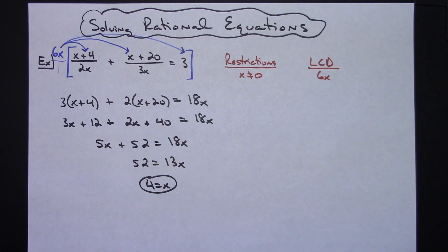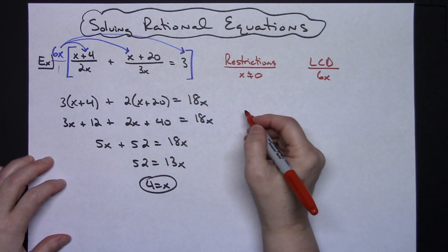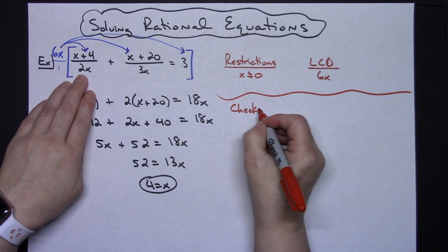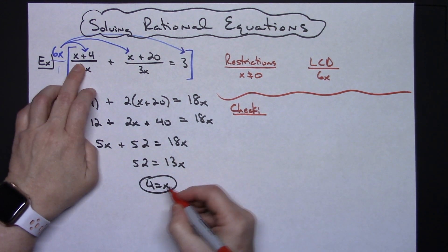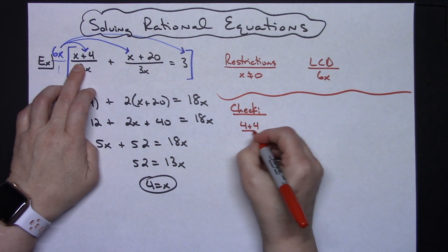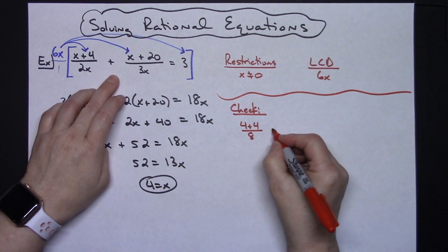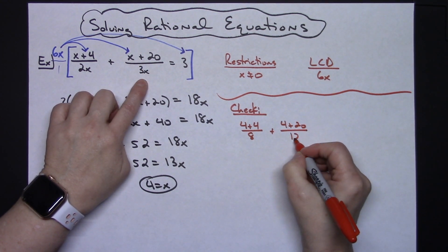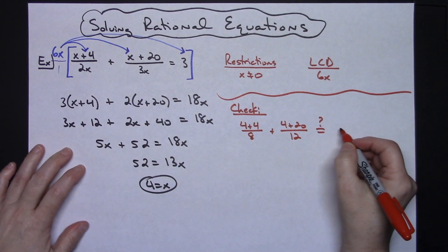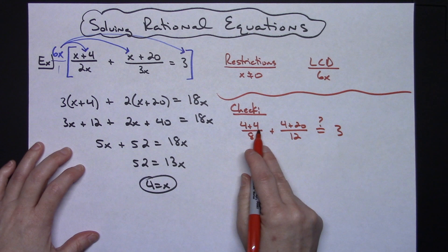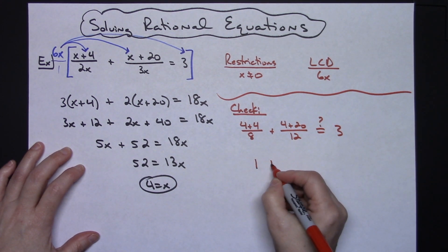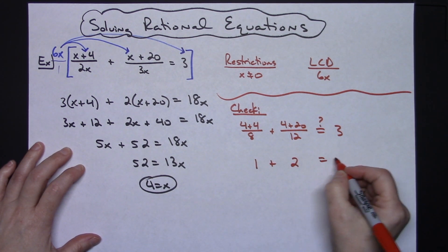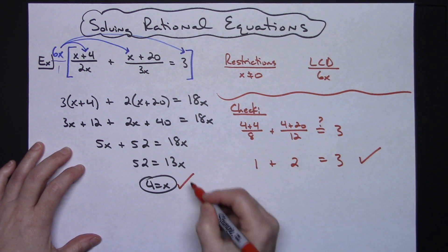You still need to plug the answer back into the original equation and check. Substituting x equals 4: is 4 plus 4 over 2 times 4, plus 4 plus 20 over 3 times 4, equal to 3? That gives 8 over 8 plus 24 over 12, which is 1 plus 2, which does equal 3. So it checks out — this is a valid answer.